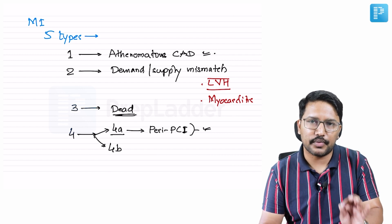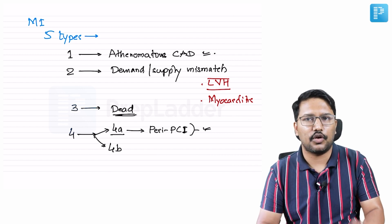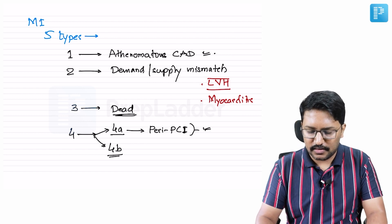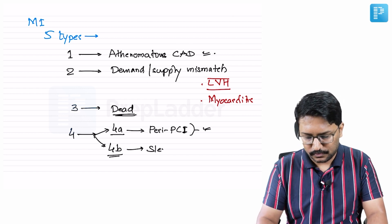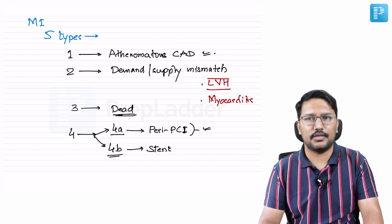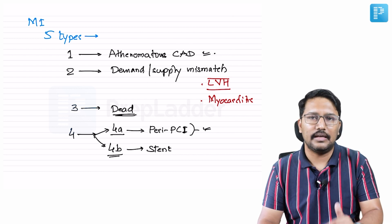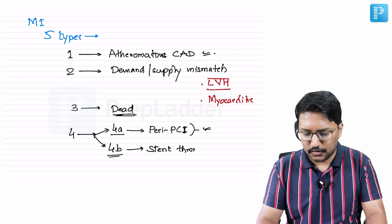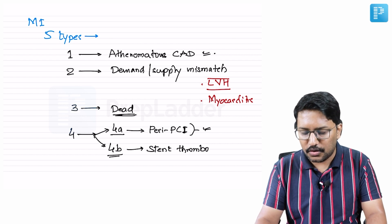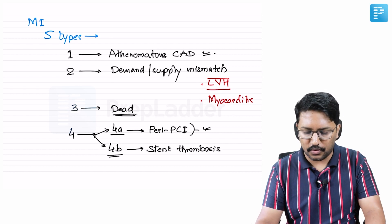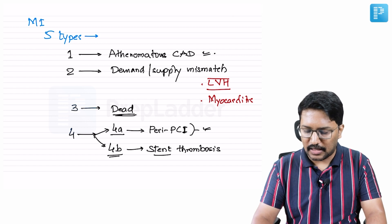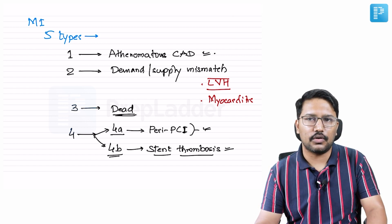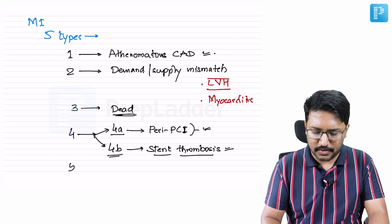Type 4B is where the patient develops stent thrombosis after a successfully performed PCI. So when things go wrong during the procedure causing MI, that is Type 4A; when the patient develops MI after the procedure in the form of stent thrombosis, that is Type 4B.